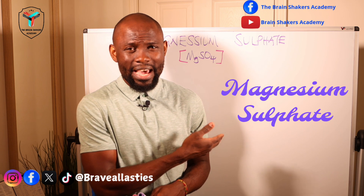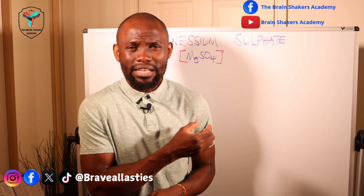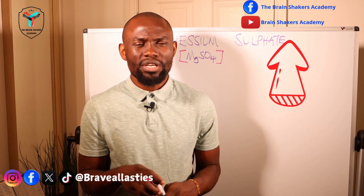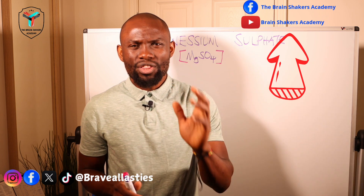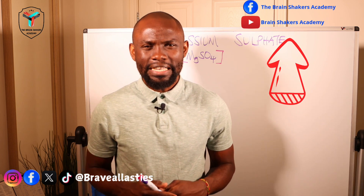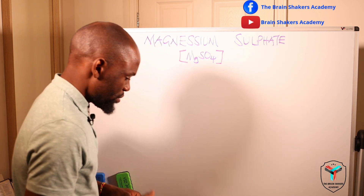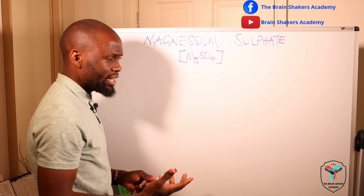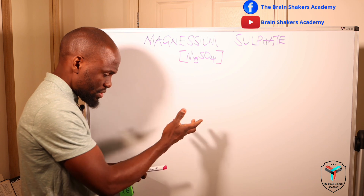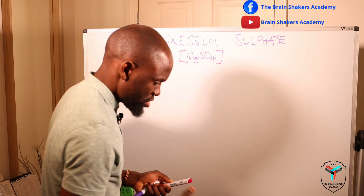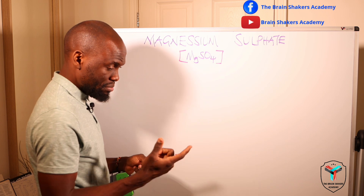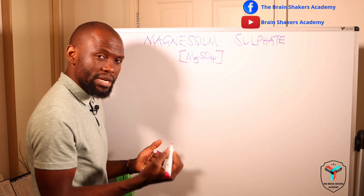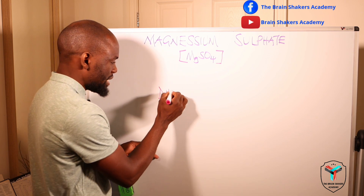Let's get into today's session and understand the role of magnesium sulfate in the management of severe preeclampsia and eclampsia. We already know that magnesium sulfate plays a key role in muscle sensitivity and neurochemical transmission. Now let's look at its mode of action. When magnesium sulfate is administered, within the muscle cells there are receptors, and one of the key receptors is what we call the DHP receptor.